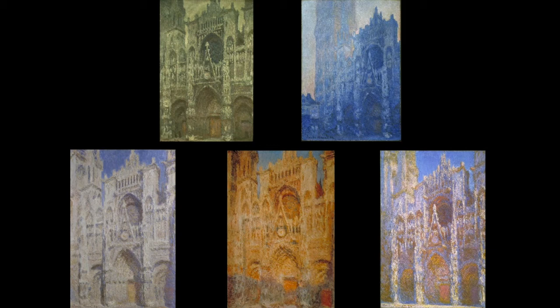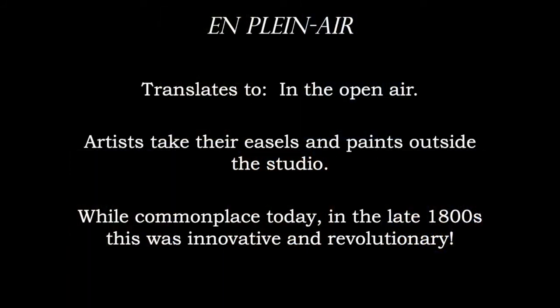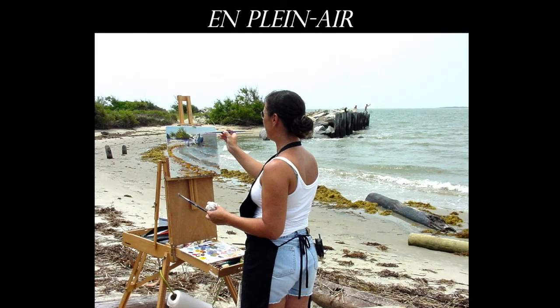Monet painted not only grain stacks, but the front of cathedrals and the Parliament building. An important term here is en plein air — French for 'in the open air.' For the first time, in the 1860s and 1870s, artists were taking their easels and paints outside the studio, painting directly in front of the object. That's how you capture perceptual color — you can't do it in a studio. While painting outside seems commonplace today, back in the late 1800s it was innovative and revolutionary.